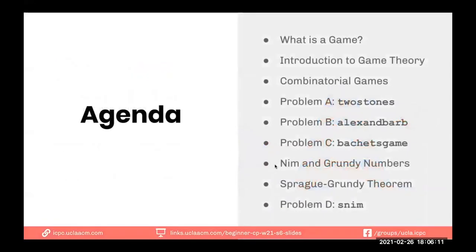Here's the agenda. We'll start with: what is a game? Then a brief introduction to game theory, combinatorial games, and three example problems that build on each other — about 15 to 20 minutes as an intro. Then we'll look at an impartial game called NIM, how to solve NIM and other games using Grundy numbers, and the Sprout-Grundy theorem. If we have time, we'll also look at a problem called SNIM, which is also on the contest.